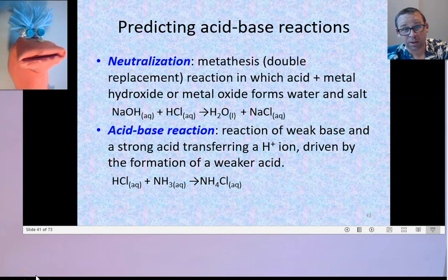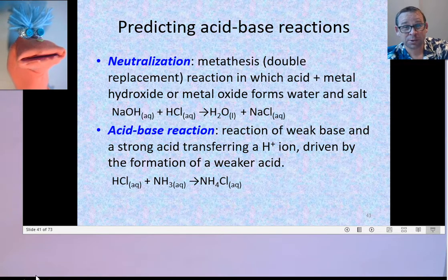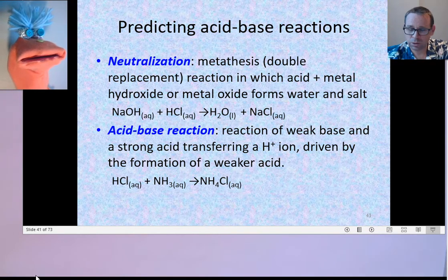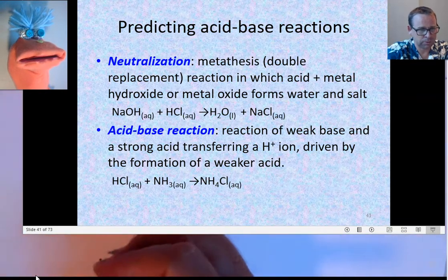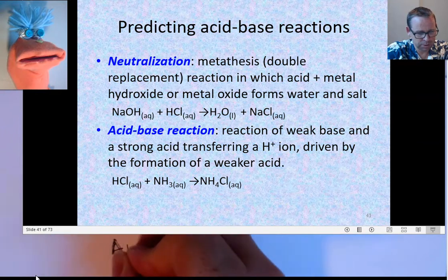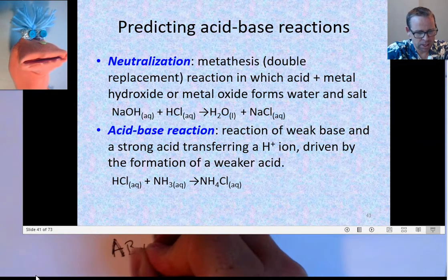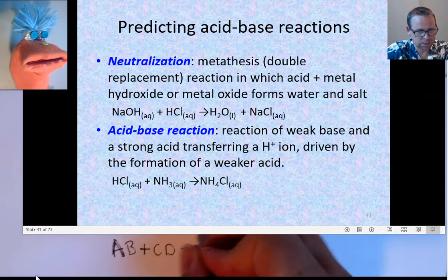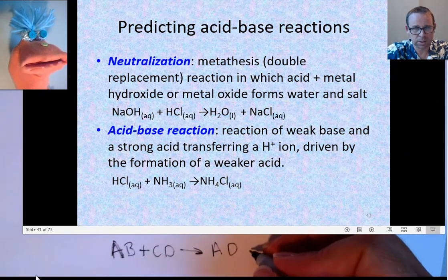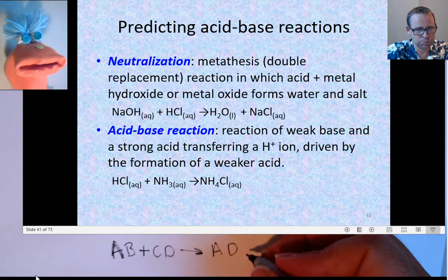Alright, so we've been able to predict a handful of metathesis reactions by using a model where we say that the general form of these metathesis reactions are AB combining with CD to form AD, and what's left? BC.